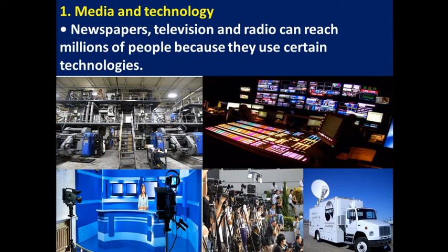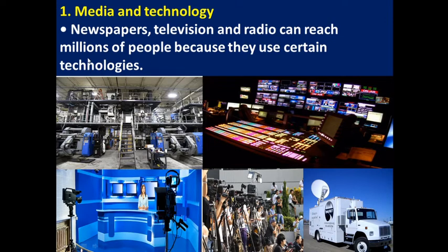The first topic in this chapter is media and technology. In media, we use different technologies to communicate from one person to another, from one place to another. Newspapers, television, and radio can reach millions of people because they use certain technologies.